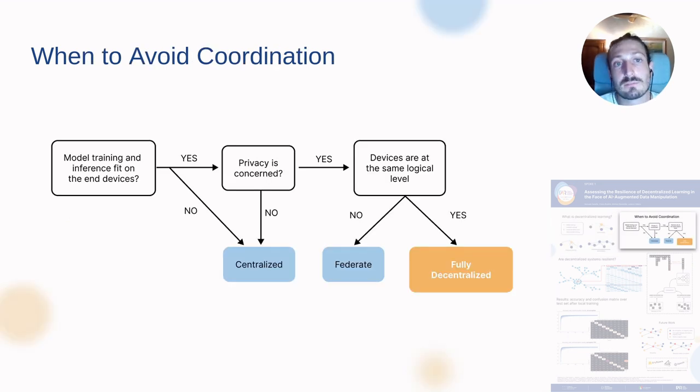When to use decentralized without coordination? The model has to fit on their own devices, both for training and for inference. Typically we look for privacy concerns. For example, hospitals cannot share the data publicly with other entities, third-party entities, or other services, and so they may use decentralized solutions. The data has to be kept in the hospital. And then we can ask ourselves if the devices are all at the same logical level. If they are at the same logical level, then we go fully decentralized.